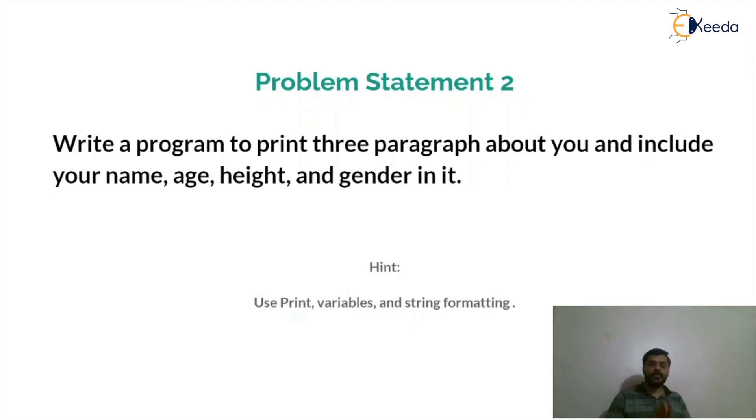Next problem statement is to write a program to print three paragraphs about you and include your name, age, height and gender. Make sure that you are not hard coding name, age, height and gender in your paragraphs. They should be coming from somewhere else, use hints.